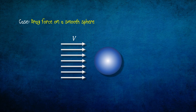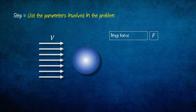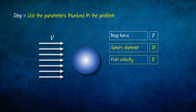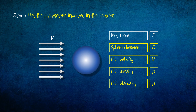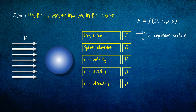Here we want to express the drag force as a function of some independent variables. Step 1 consists of listing the parameters involved in the problem. The drag force on a smooth sphere is mainly influenced by the sphere diameter d, the fluid velocity v, the fluid density rho, and the fluid viscosity mu. Since we want to express the drag force as a function of other variables, the drag force is called the dependent variable, and the remaining parameters are called independent variables.